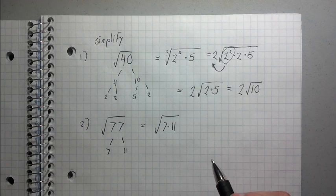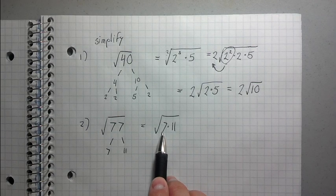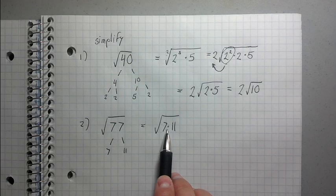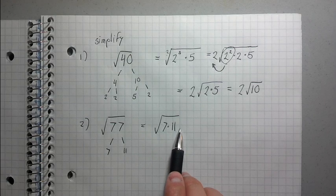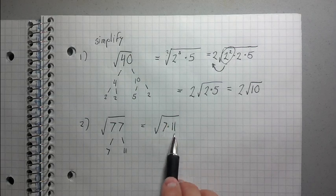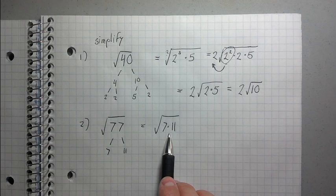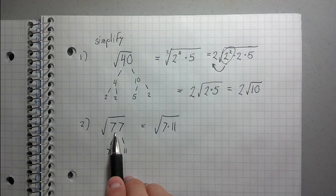So I can rewrite root 77 as the root of 7 times 11. Now the problem is here, is you see how there's not, I don't have a pair of 7's, and I don't have a pair of 11's. Because I don't have a pair of either one of these factors, I can't do anything. Meaning that root 77 is fully simplified.